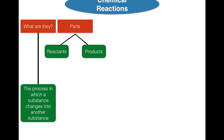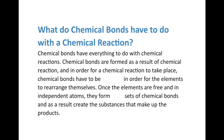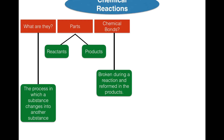The second part of our organizer covers the parts of a chemical reaction: reactants and products. Now, chemical bonds have everything to do with chemical reactions. Chemical bonds are broken during a reaction — when compounds are used as reactants, their bonds must be broken so the elements can rearrange. Once the elements are free as independent atoms, they can form new sets of chemical bonds, creating the substances that make up the products. So bonds are broken in the reactants and formed in the products.